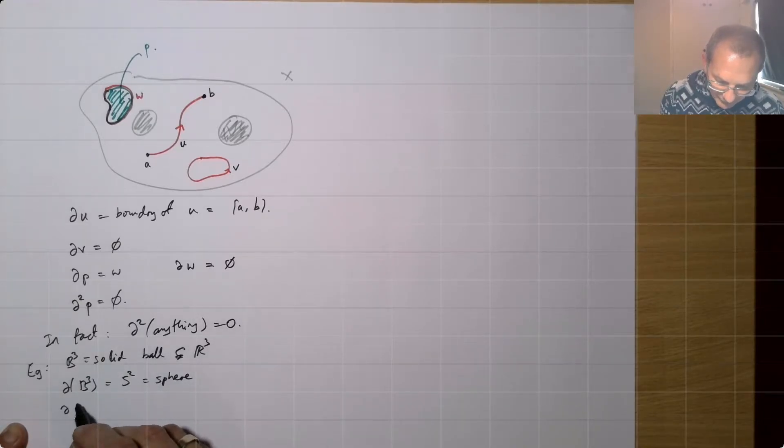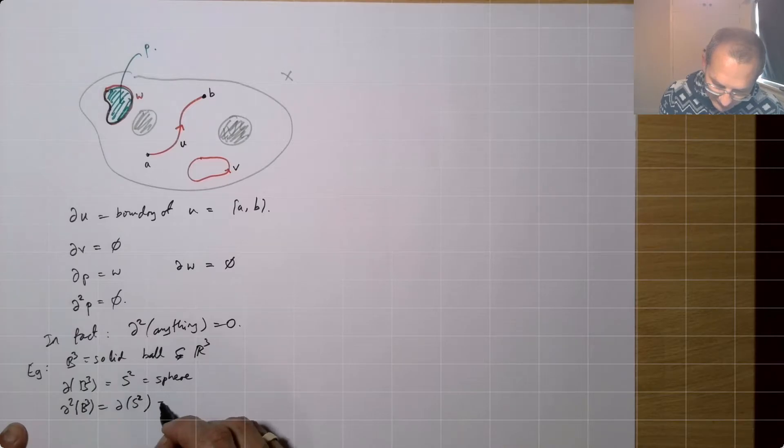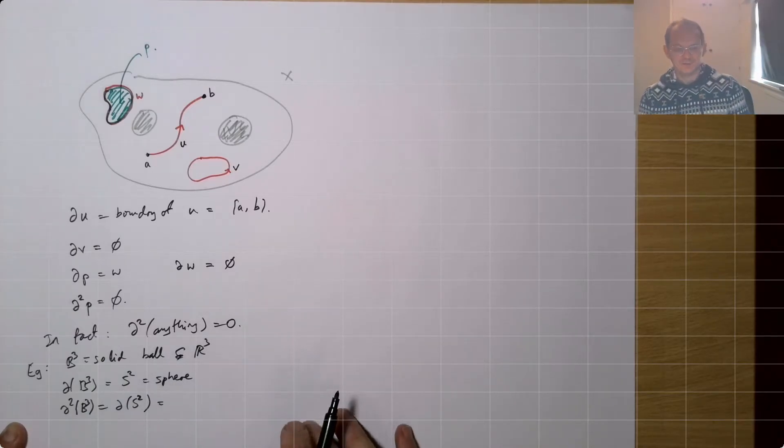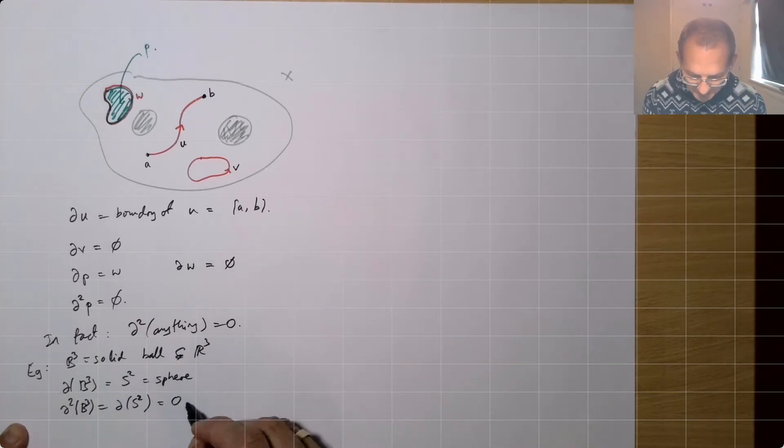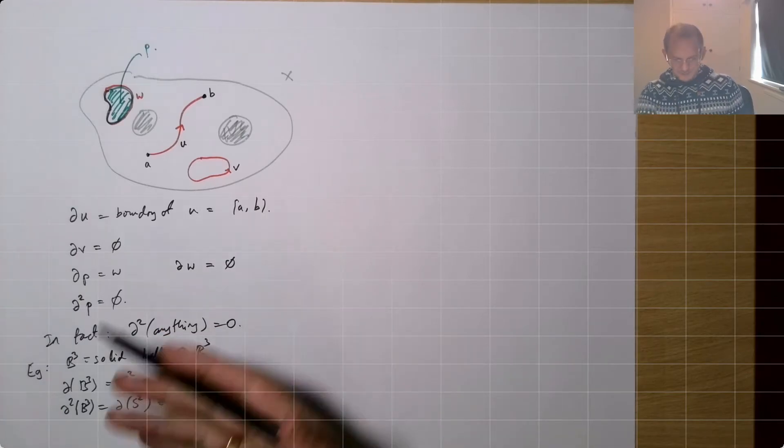And boundary of D squared of this B3, which is the boundary of S2. But sphere, that's a surface without any boundary. This is empty, again, an example of what we said here with D squared, it's going to be zero.